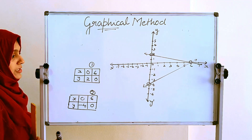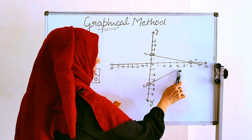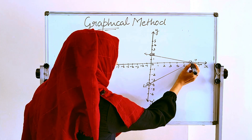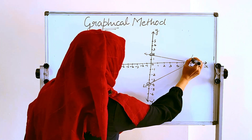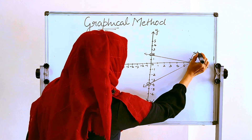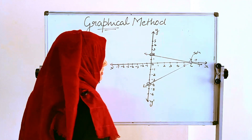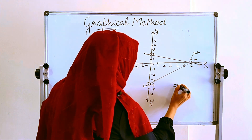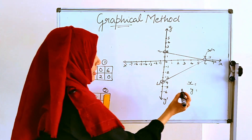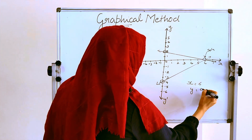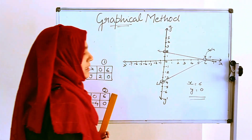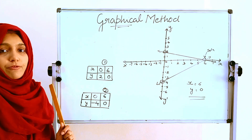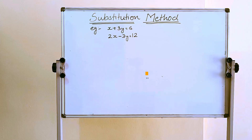For the second equation, the line moves and intersects with the first equation's line at the point (6, 0). So the solution is at the intersecting point. Our solution is always at the intersecting point. The point of intersection gives x equals 6, y equals 0. So this is our solution.